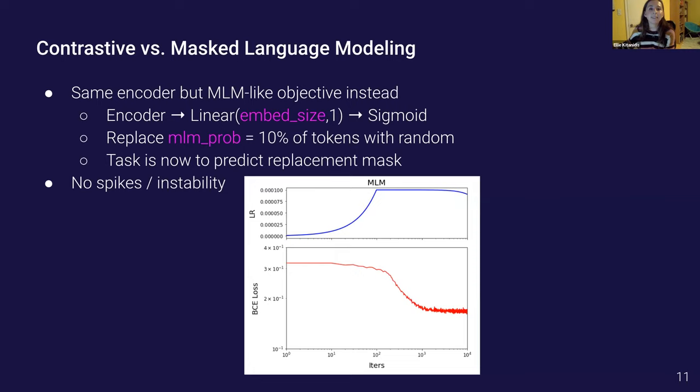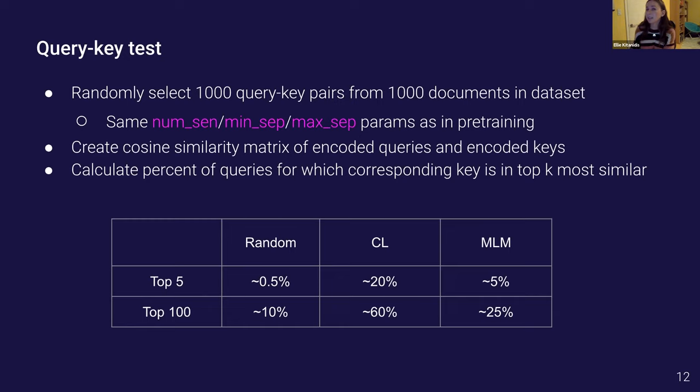We wanted to test that this training difficulty is related to the contrastive loss. So we tried training the model with an MLM-like objective instead, for anyone not in the language modeling world that stands for masked language modeling. Basically we replace 10% of the tokens with random tokens and then take our same encoder and feed it into a linear and sigmoid layer instead. So now the task is to predict the replacement mask. This is slightly different than the BERT objective of trying to predict the masked tokens since we don't have a decoder or anything generative, we're just trying to predict the mask itself. When we train this model we find that we get much more nicely behaved loss functions. So that does seem to indicate that it is the contrastive loss that's causing the problems.